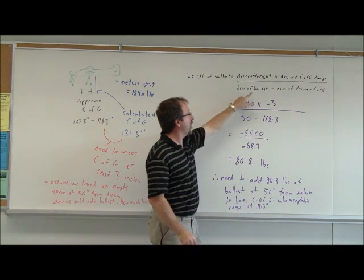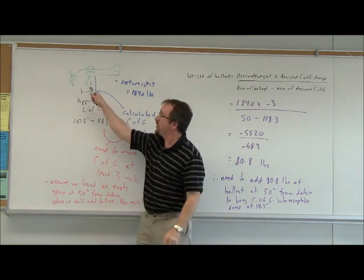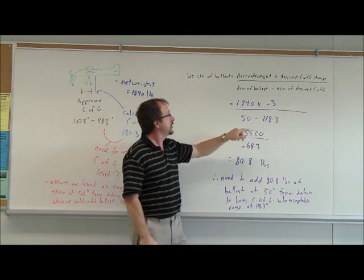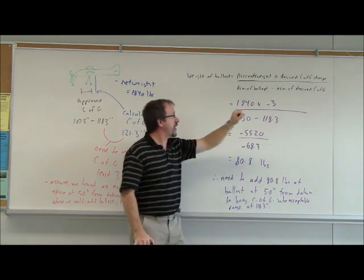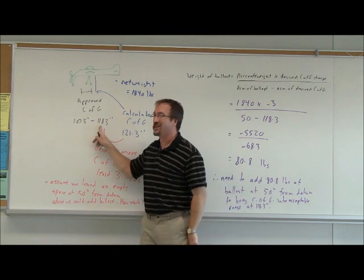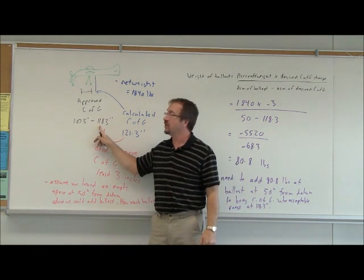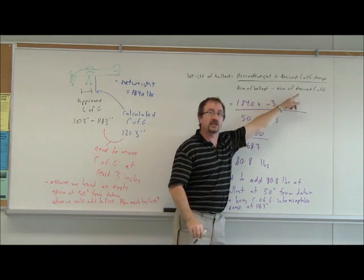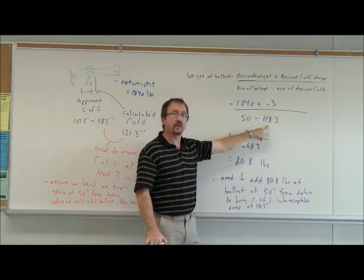We divide that by the arm of the ballast, which is 50 inches, minus the arm of the desired center of gravity. Moving three inches from 121.3 brings us to the edge of the approved range at 118.3. So the arm of our desired center of gravity is 118.3.